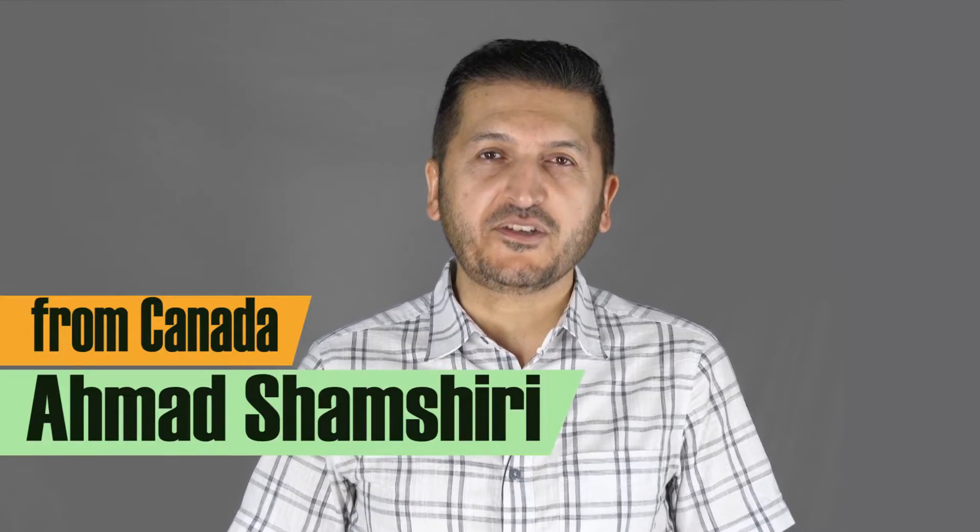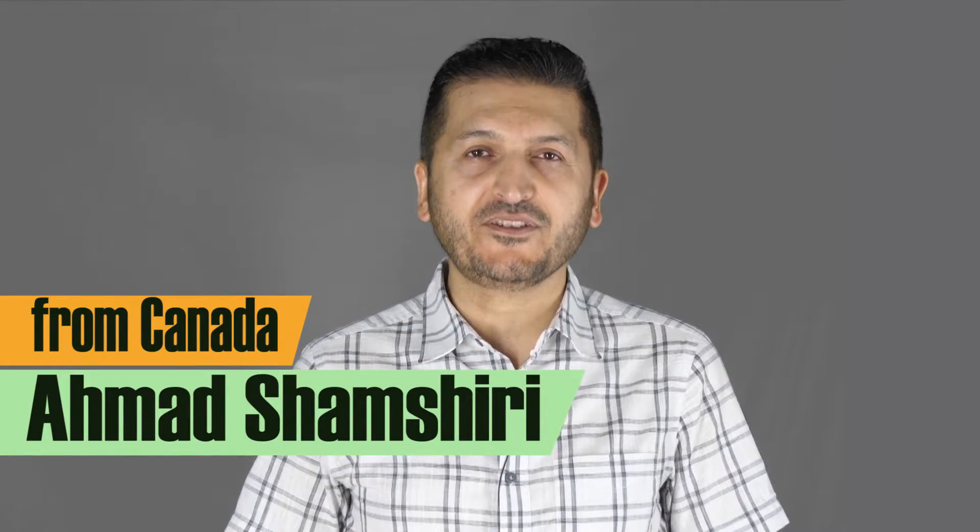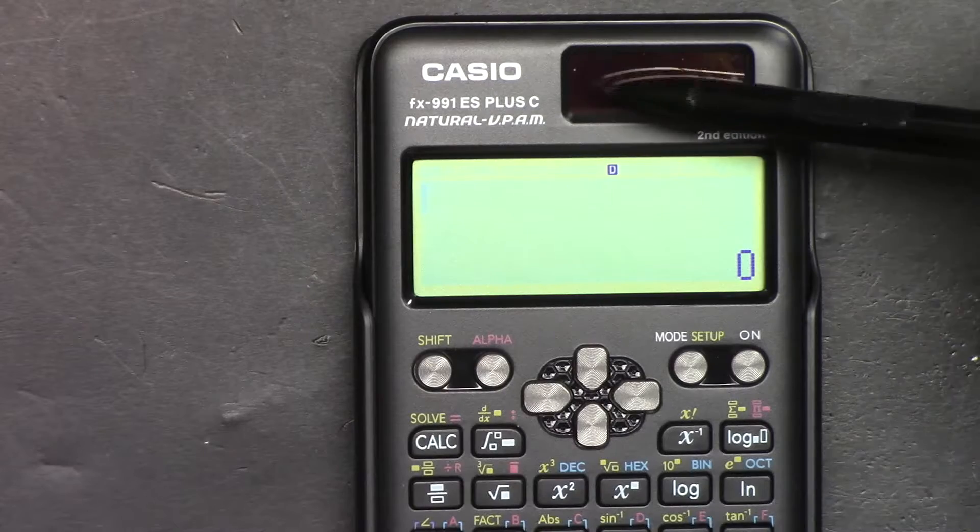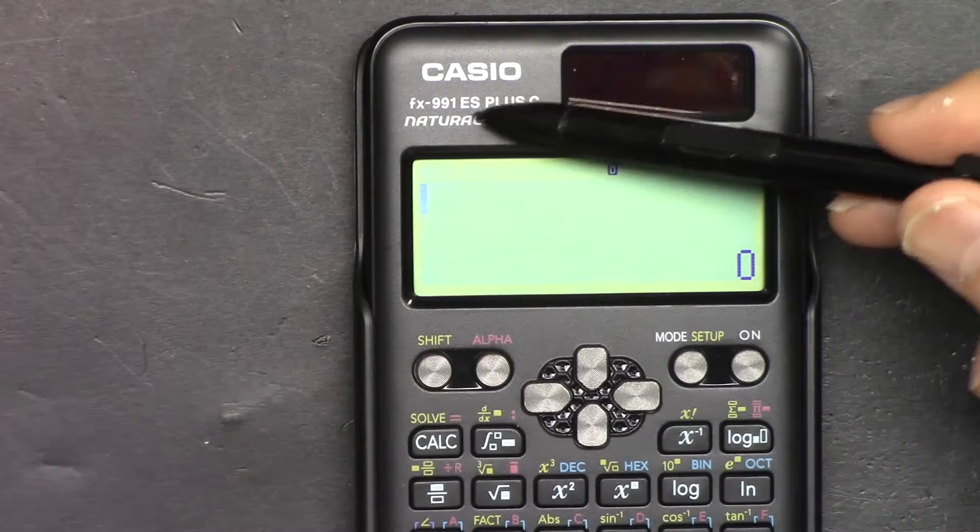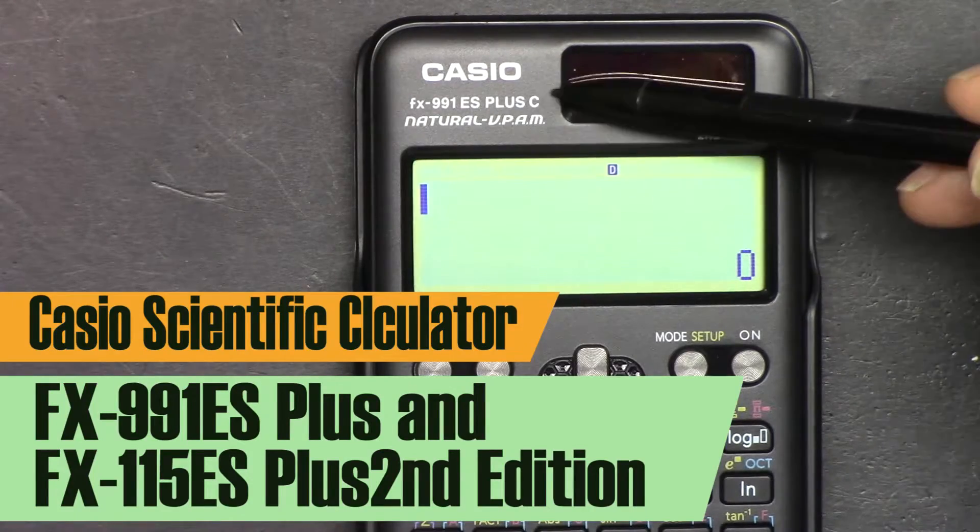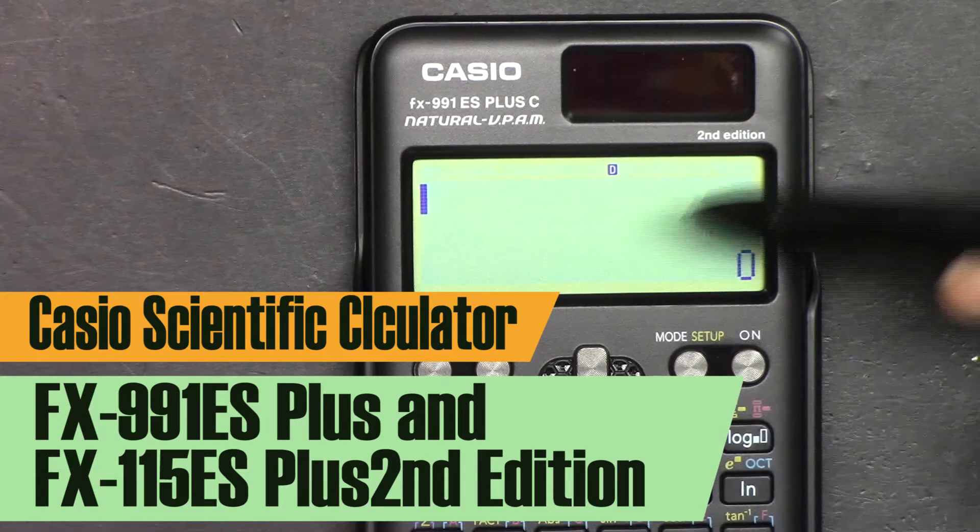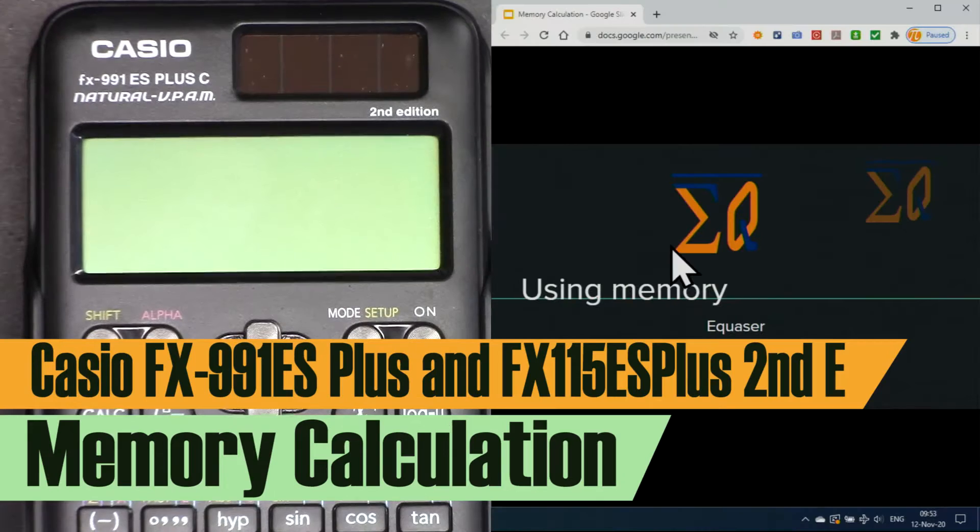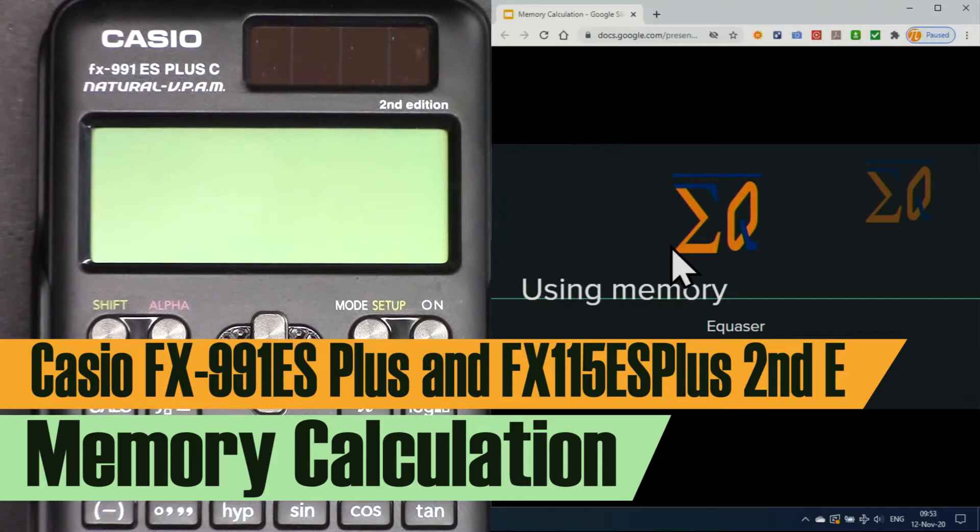Hi, welcome to a video tutorial from Equasor. My name is Ahmad Shamshiri. In this video we are going to use this Casio FX991ES Plus second edition scientific calculator to use memory calculation with this calculator. Let's get started.